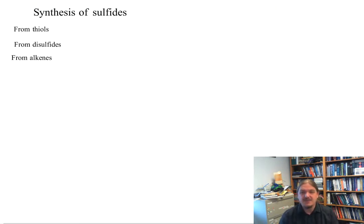Sulfides can be made through a number of reactions, but I'm going to talk about three in particular. One is from thiols, using thiols as nucleophiles. One from disulfides. And then finally, we're going to talk about a reaction of thiols with alkynes.